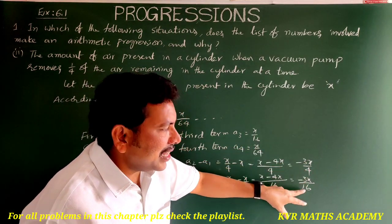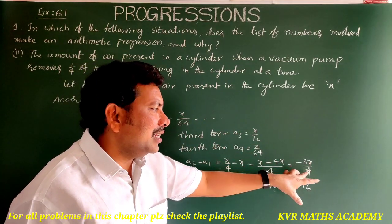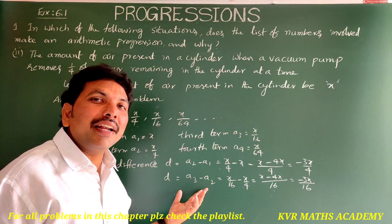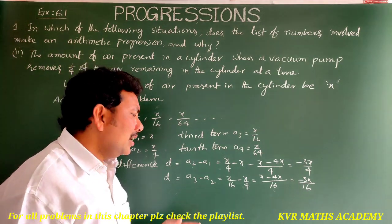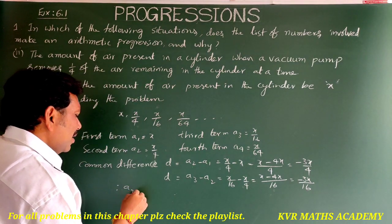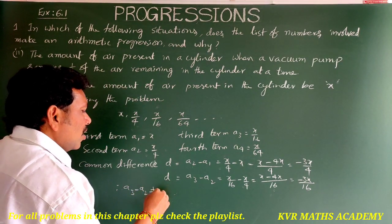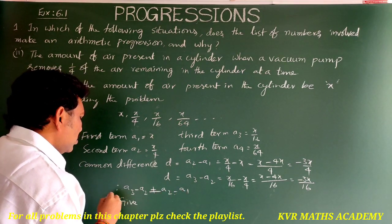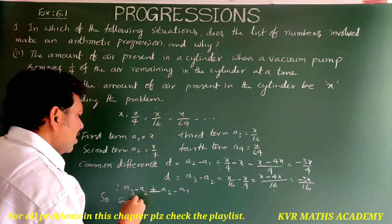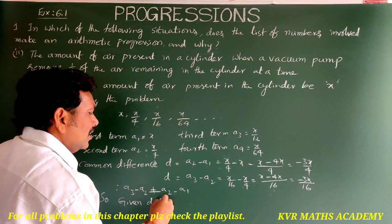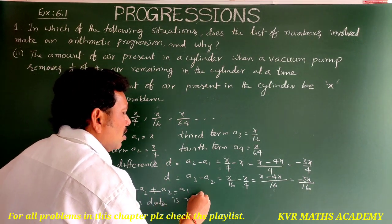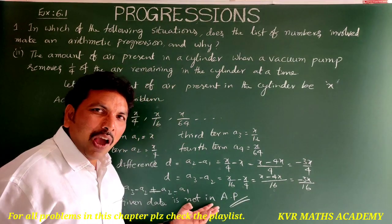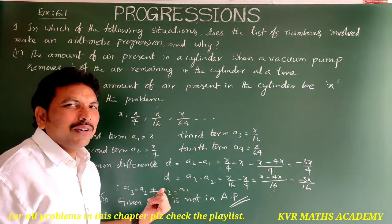Since -3x/4 ≠ -3x/16, the common differences are not equal. Therefore a₃ - a₂ ≠ a₂ - a₁, so the given data is not in AP.